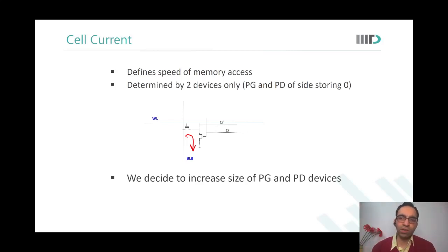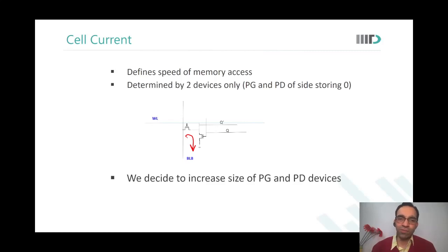Why don't we always keep the pass gate and pull-down very big? Because area is the most important figure of merit. If you really increase the size of the pass gate and pull-down to huge dimensions, area goes for a toss.